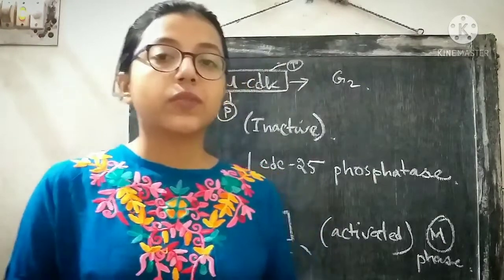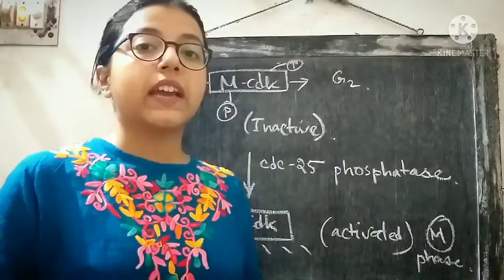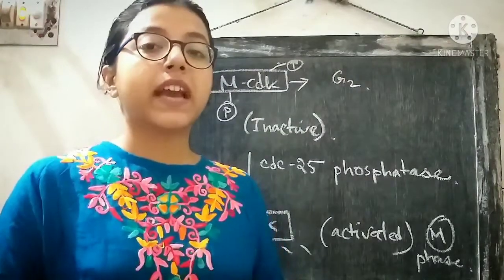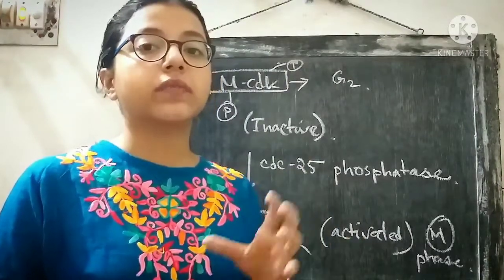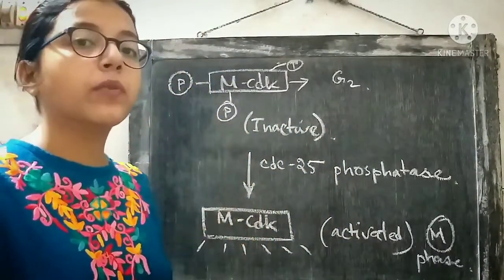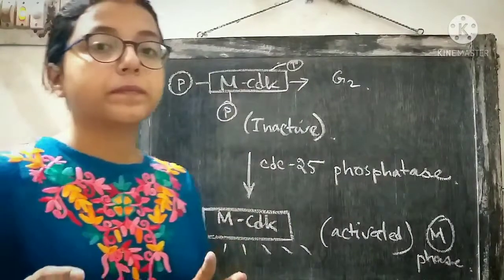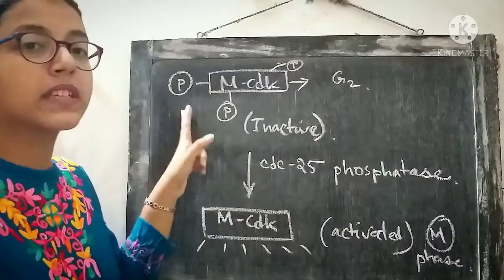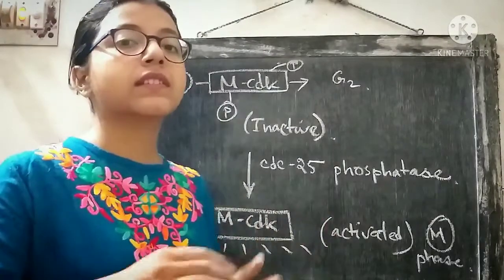In the normal case, the cell has replicated all its DNA correctly and is now ready to proceed to the M phase. The inhibitory phosphorylation must be removed in order to activate MCDK, because MCDK is responsible for progression into the M phase. This activation of MCDK occurs by dephosphorylation — these inhibitory phosphates are removed by enzymes, which helps in the progression of the cell into the M phase.